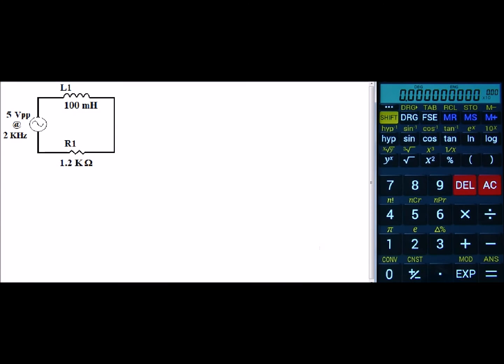Greetings. Today let's look at a series RL circuit. My circuit has a 5 volt peak-to-peak voltage source that's running at 2 kilohertz. My inductor is 100 millihenries and my resistor is 1.2 kilo ohms.